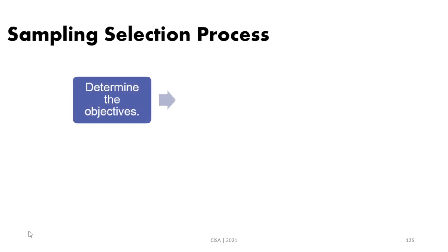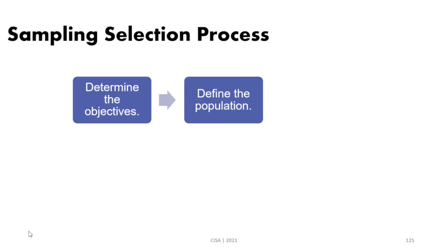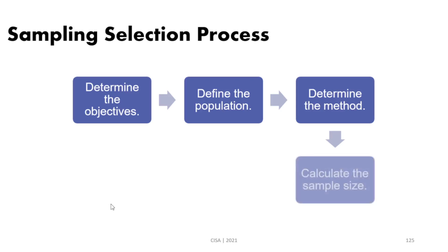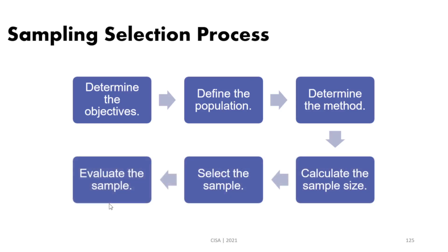Here is how to select a sample. First, determine the objective. Then define the population — this can be processes, documents, controls, or computer devices. Next, determine the sampling method: statistical, non-statistical, variable, attribute, stop-or-go, or discovery. Then calculate the sample size by percentage. Finally, select the sample and evaluate it against the criteria or control. Remember, the sample is the set of items on which we will apply our control testing.